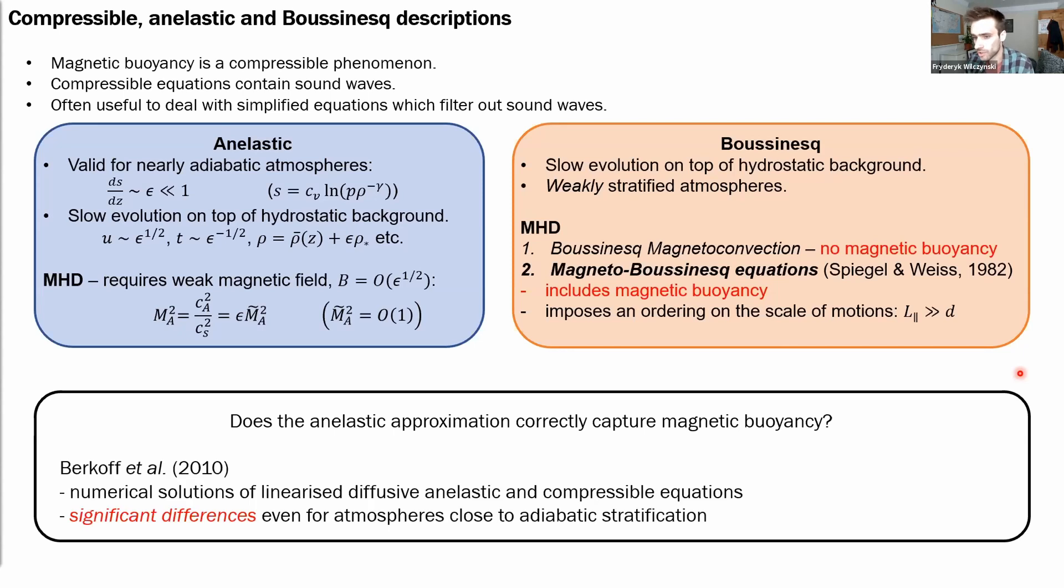Such a question has been previously addressed in the study by Berkhoff and collaborators through numerical solutions of the linear diffusive anelastic and compressible equations, where they actually found that under certain circumstances there can be significant differences in the properties of the instability, even for atmospheres close to adiabatic stratification.